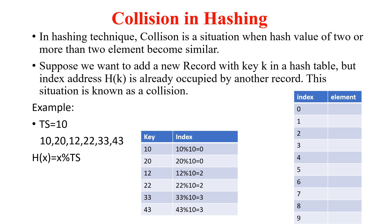Similar like that, if I come to the collision in hashing, the definition says that collision is a situation when the hash value of two or more than two elements becomes the same. It means that in hashing, there are different methods — which I have already explained, please visit the previous videos — that are going to help you to calculate the index of the element.